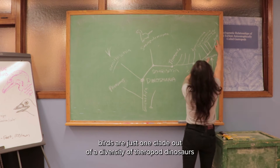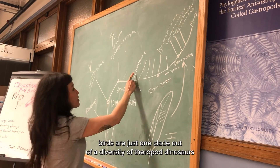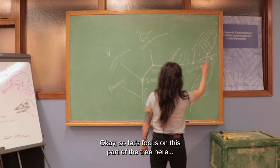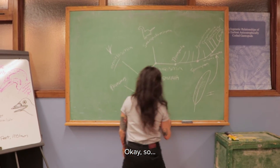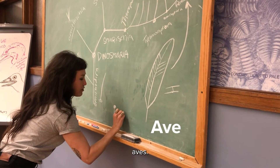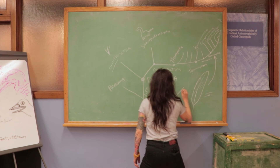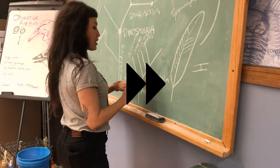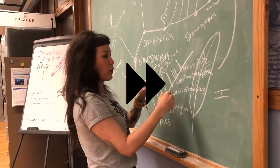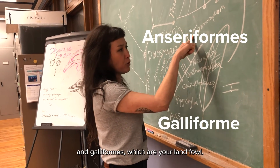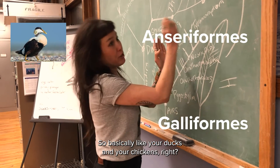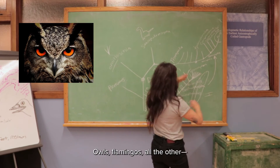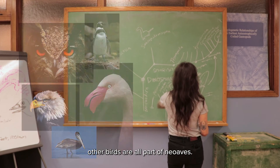You can see that birds are just one clade out of a diversity of theropod dinosaurs, which are one of three major clades within Dinosauria. Let's focus on this part of the tree. Here is the node Aves, and here is Archaeopteryx. Then you have Anseriformes — your waterfowl — and Galliformes — your landfowl, basically ducks and chickens. And here is Neoaves, which is everything else: owls, flamingos, and the huge diversity of other birds.